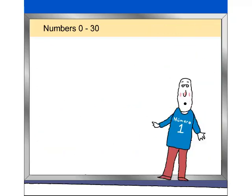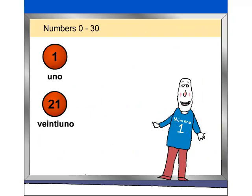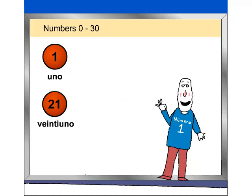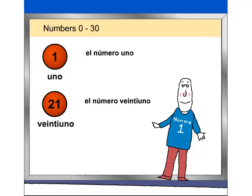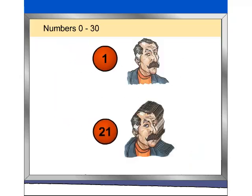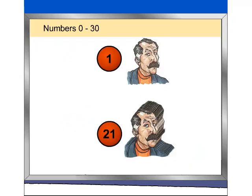Now, something interesting about the Spanish number one. El número uno and numbers ending in uno, like veintiuno, have more than one form in Spanish. Atención. You already know that uno and veintiuno are used when counting, and also when the number follows a noun, even if the noun is feminine: el número uno, el número veintiuno, la lección uno, la lección veintiuno. However, before masculine nouns, uno changes to un: un hombre, veintiún hombres. Notice the accent change in veintiún.